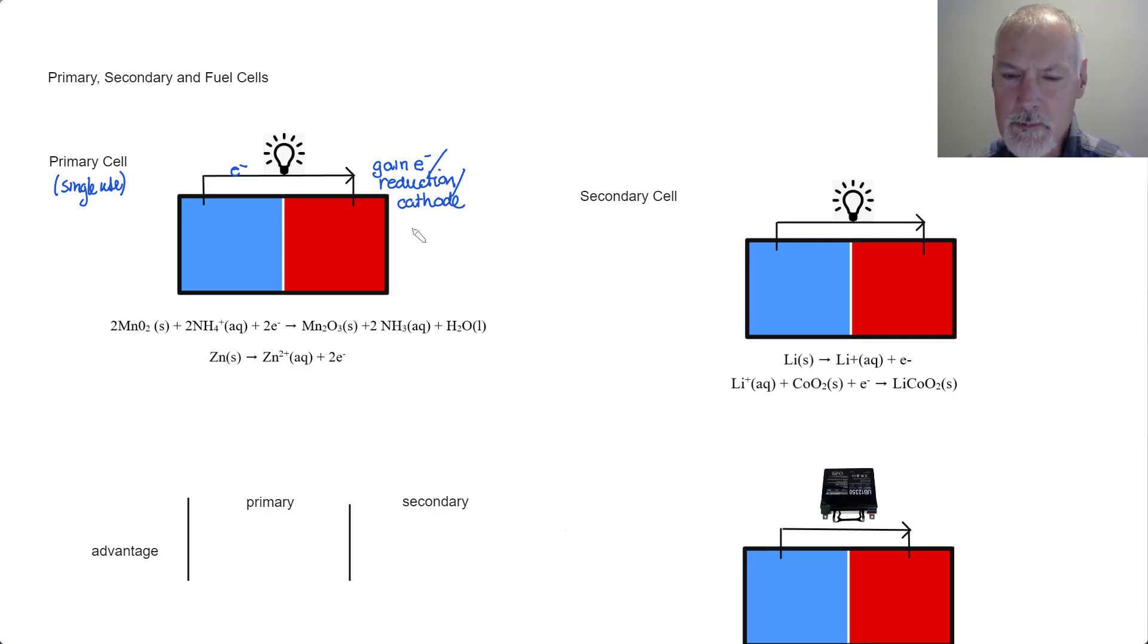I remember this from a little phrase, that phrase being cats go grr. GRR standing for the gain of electrons is reduction. Cat is the cathode. And the other thing you notice in cat is this symbol here, T. This also constitutes the positive terminal of a voltaic cell.